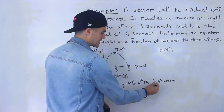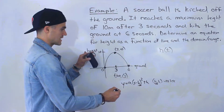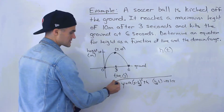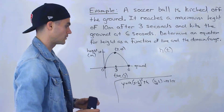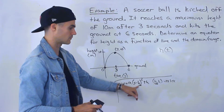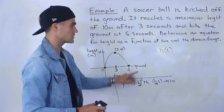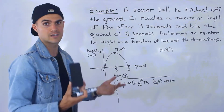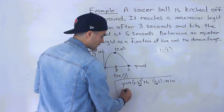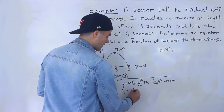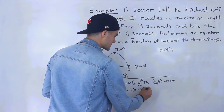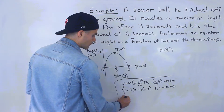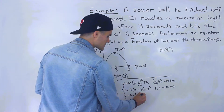One thing to note: this h in the vertex form formula is different from the h representing height in our problem. The h in vertex form represents the x-value of the vertex of any parabola. You could also use factored form: a(x − r)(x − s), where r and s are the x-intercepts. Or standard form: y = ax² + bx + c.